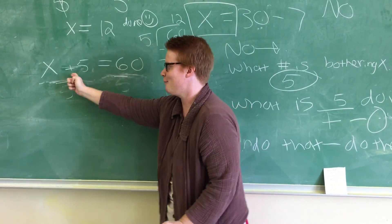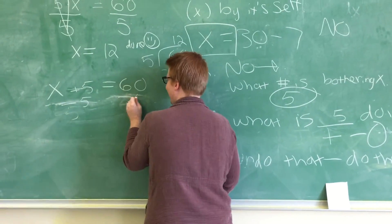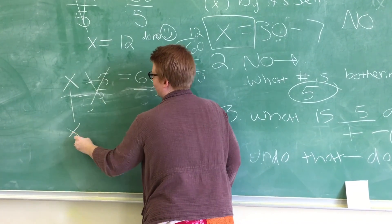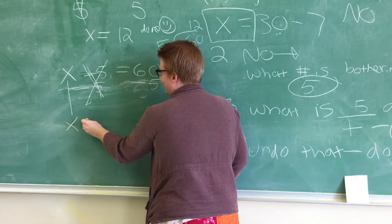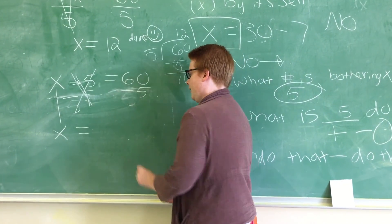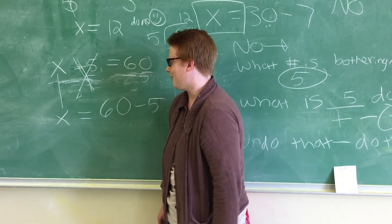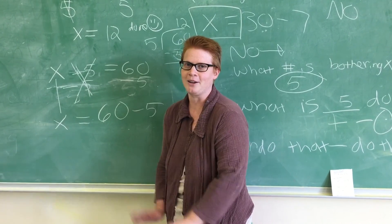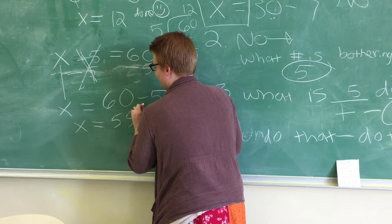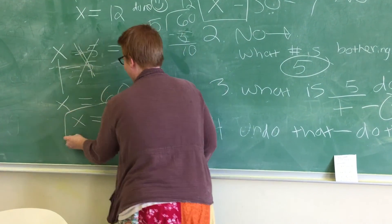We must be aware of what that number's actually doing to the letter, so we can do minus 5, minus 5. Math goes away. I'm just going to rewrite this thing without thinking. Equal sign and 60 minus 5. 60 minus 5 is 55. X equals 55. Is x by itself? Yes, it is. Now we're done.